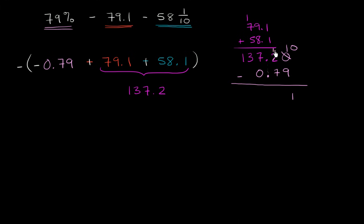Now in the tenths place, we don't have enough up here, so let's take one from the ones place, so that becomes a six. One is ten tenths, so now we have eleven tenths. Eleven minus seven is four. We've got our decimal place, six minus zero is six, and then we got our thirteen, right, just like that.